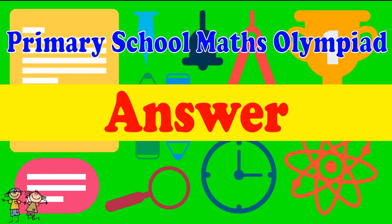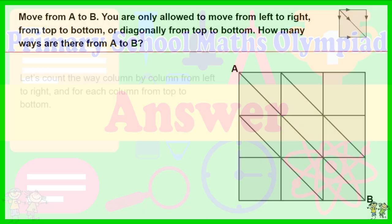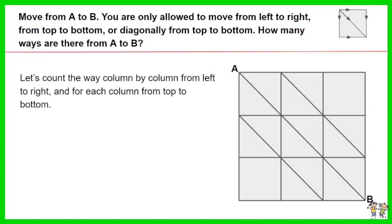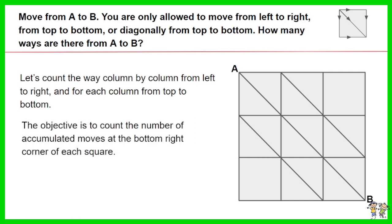Here is the recommended answer. Count the number of ways, column by column from left to right, and for each column from top to bottom. The objective is to count the number of accumulated ways at the bottom right corner of each square.